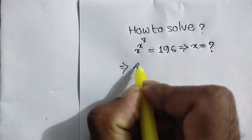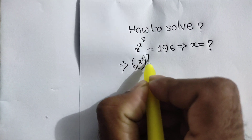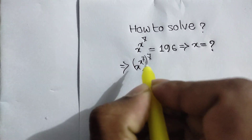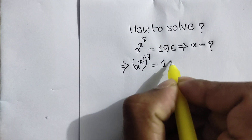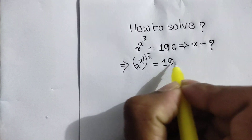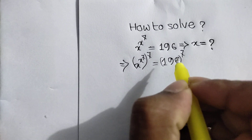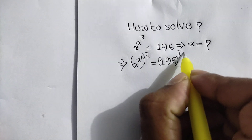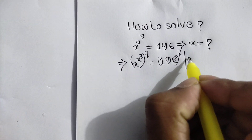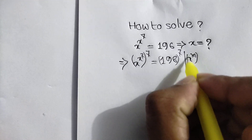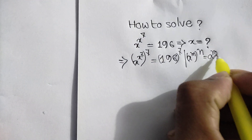So we can write x to the power x to the power 7, whole power 7, is equal to 196 to the power 7. Now we can apply this rule: a to the power m to the power n is equal to a to the power mn.